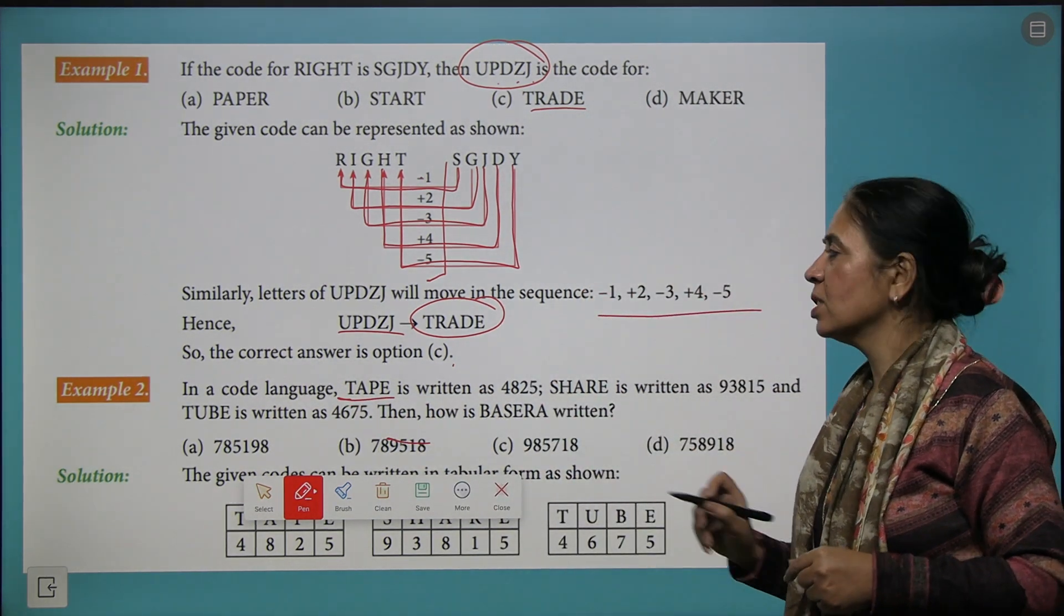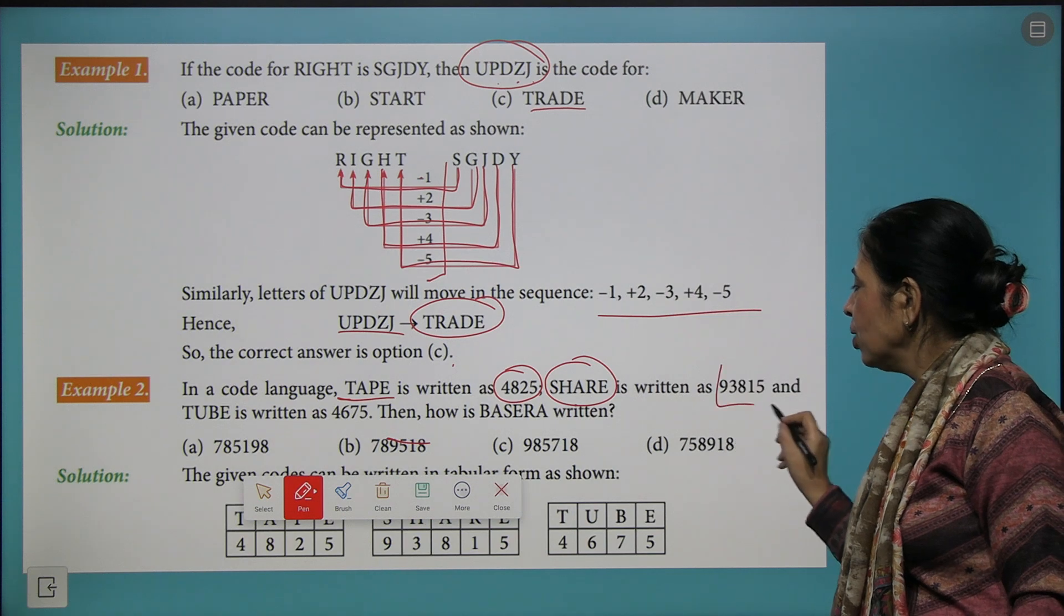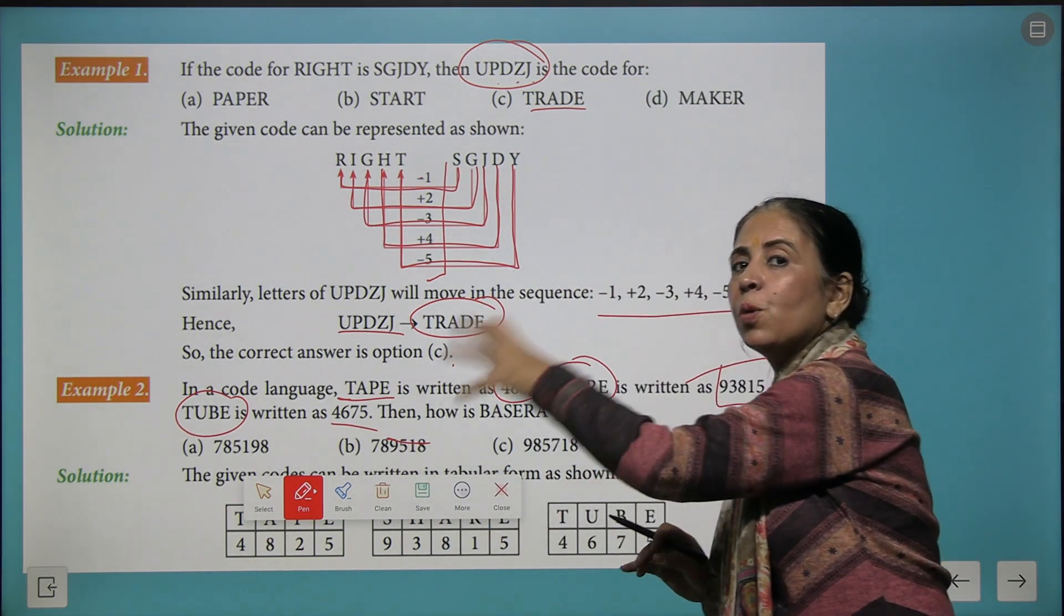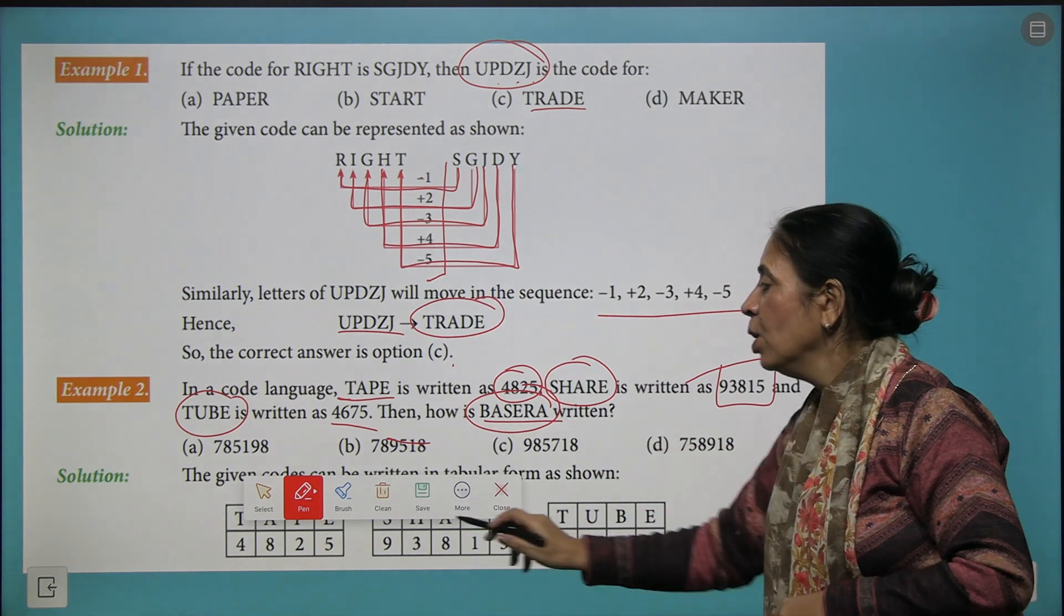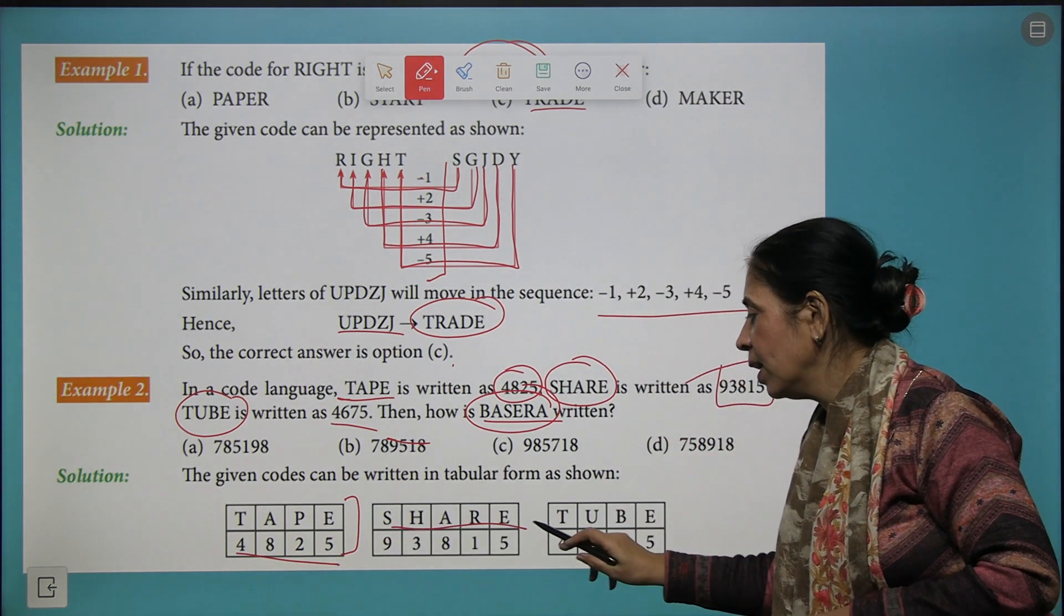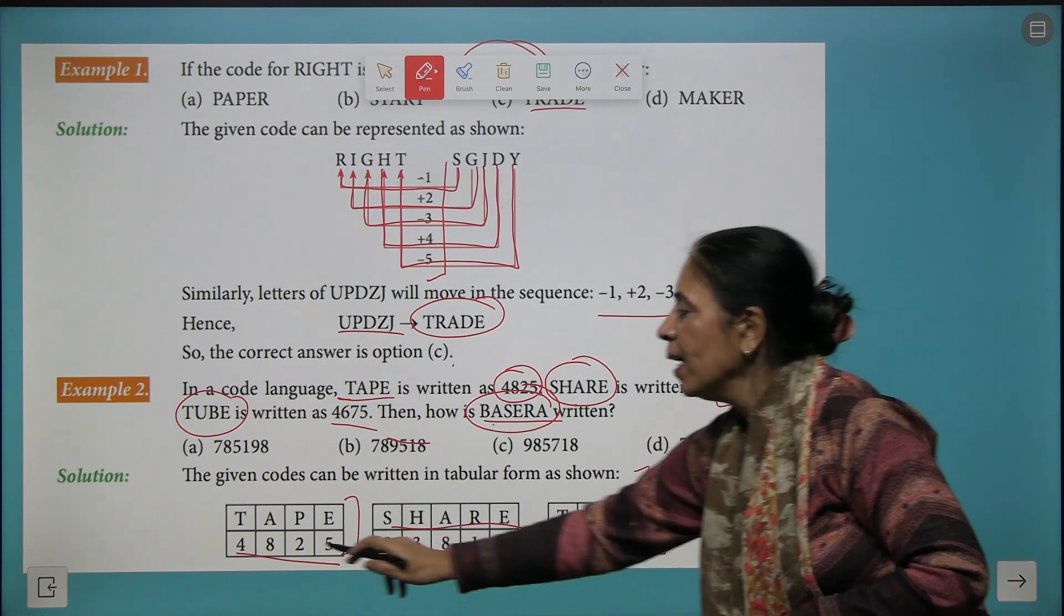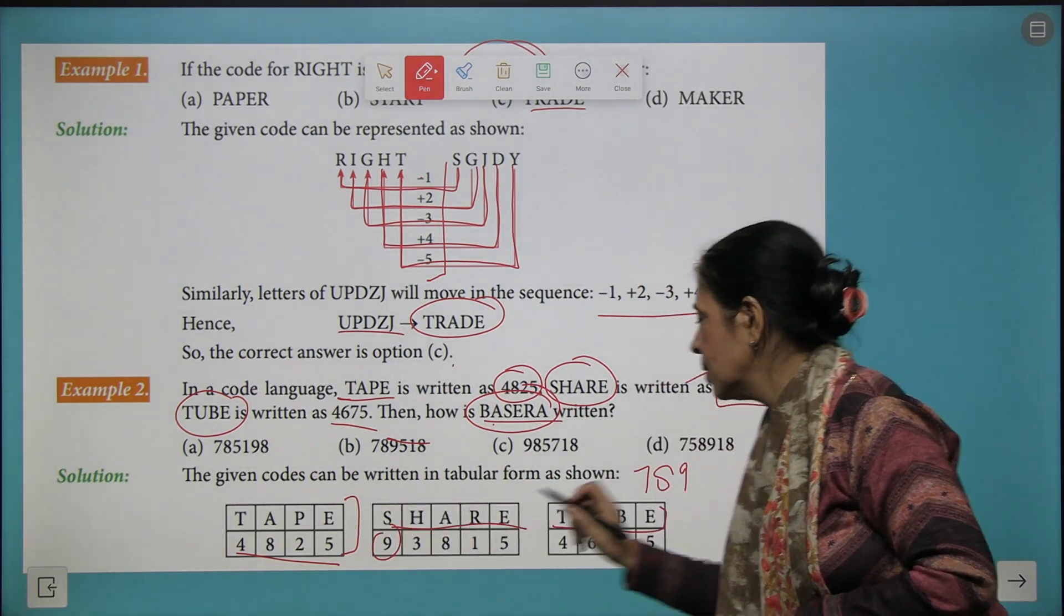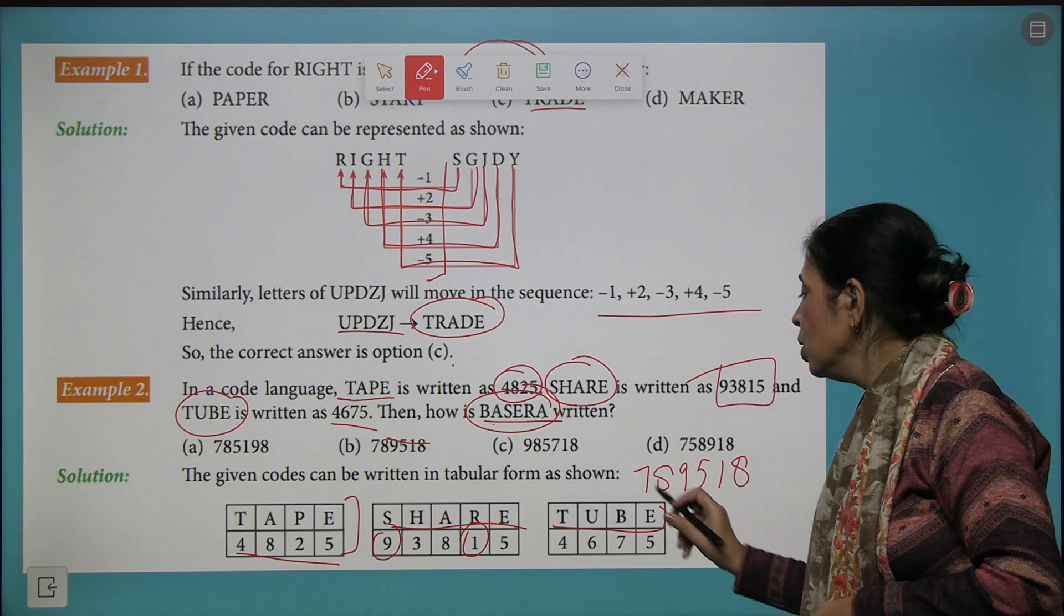In a certain code language, TAPE is written as 4825, SHARE is written as 93815, and TUBE is written as 4675. Now using the codes for these three words, you need to find what code will be for BASERA. So we first write down the codes for TAPE, then the codes for SHARE, and the code for TUBE. Now let's see: B is 7, A is 8, S is 9, E is 5, R is 1, and again A stands for 8.